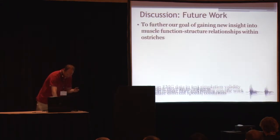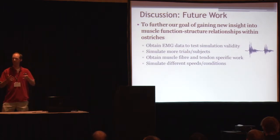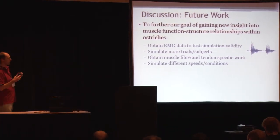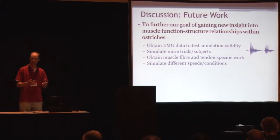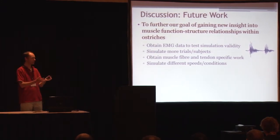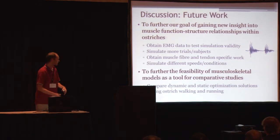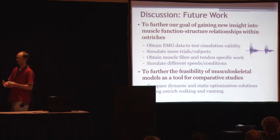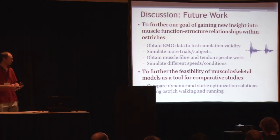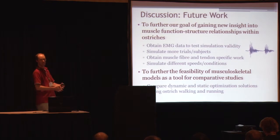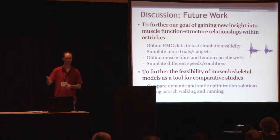So I'm out of time, so I'll skip that. Just to give you an overview of where we're going. Basically we want to continue to put this model through the paces. It would be ideal to get some EMG data to test our simulation validity. Obtain muscle fiber tendon specific work to specifically look at the energy storage and return in those tendons of the ostrich. Simulate different speeds and conditions. And lastly, we also want to compare dynamic and static optimizations to see if running true forward dynamic simulations provide different results or similar results.